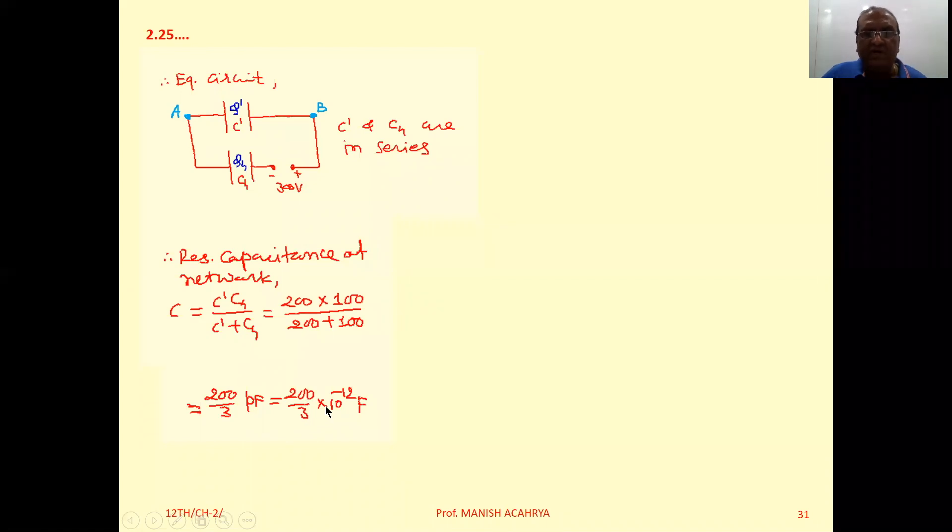That is 200/3 × 10^-12 farad. This is the equivalent or resultant capacitance of the given entire network. Clear up to this one. Now we have to calculate the charge.